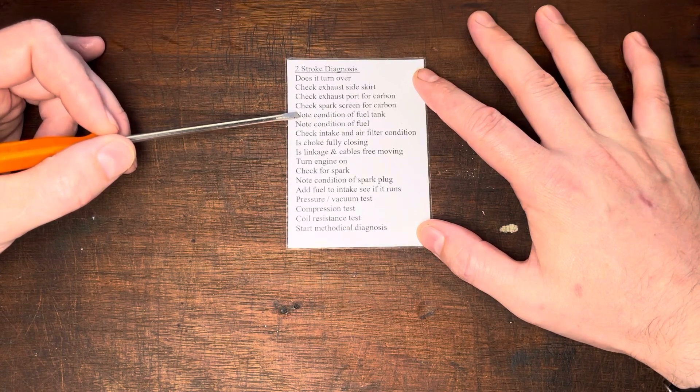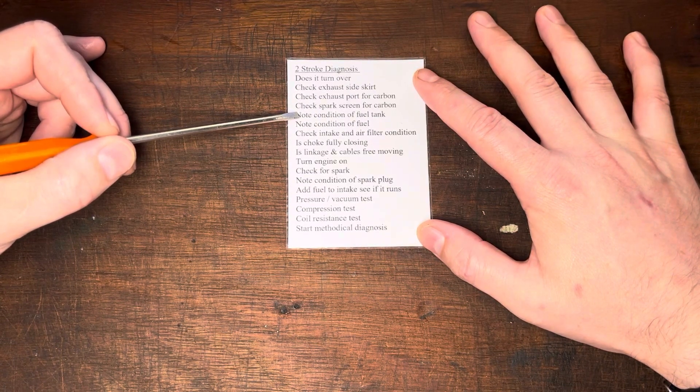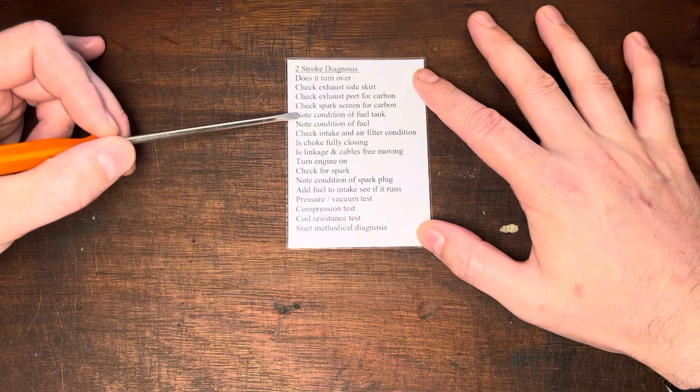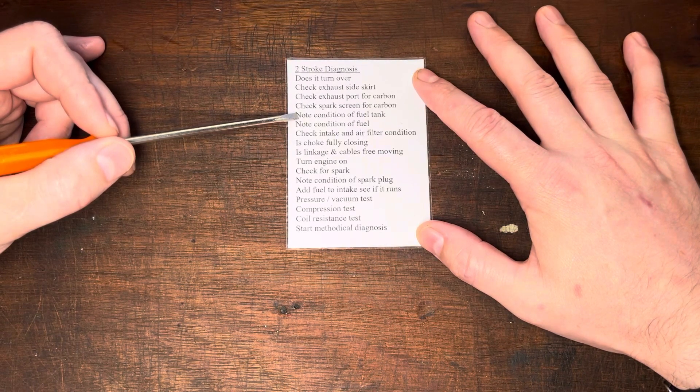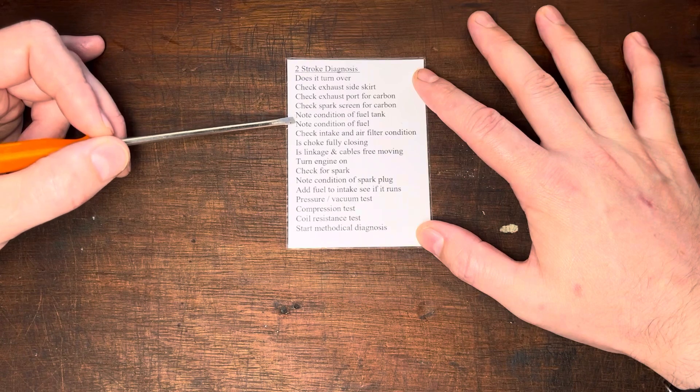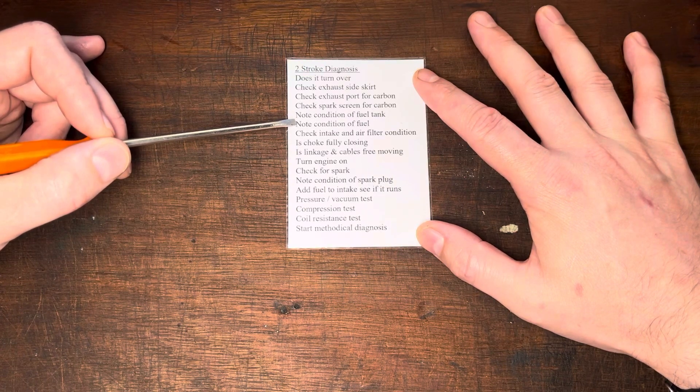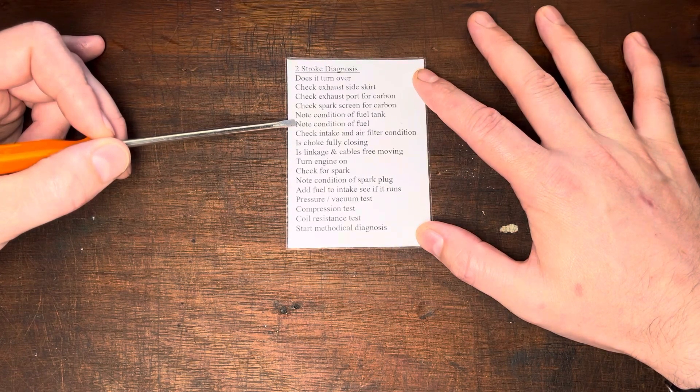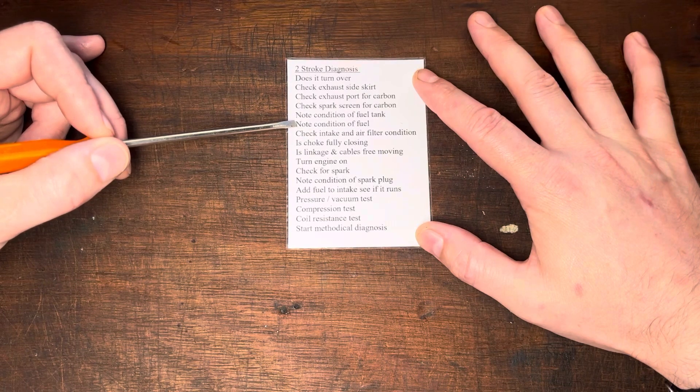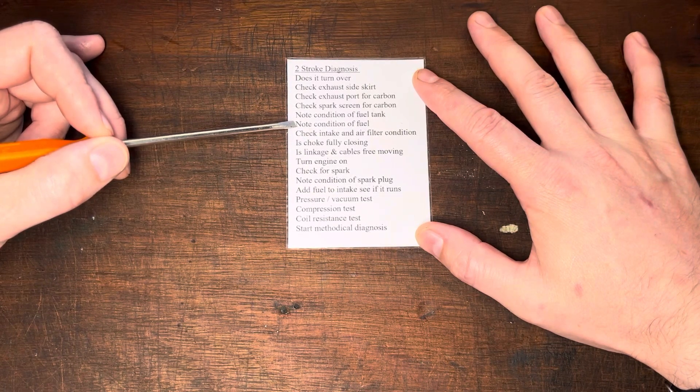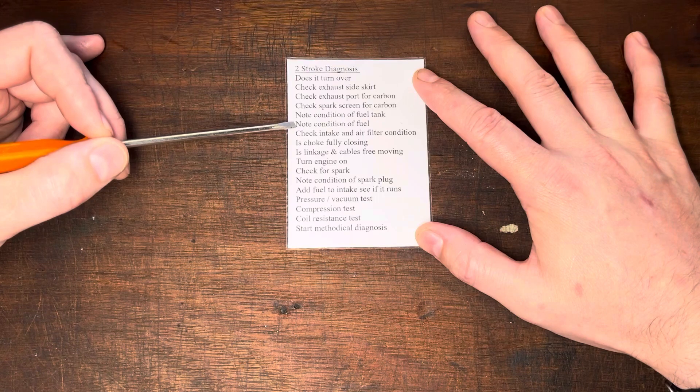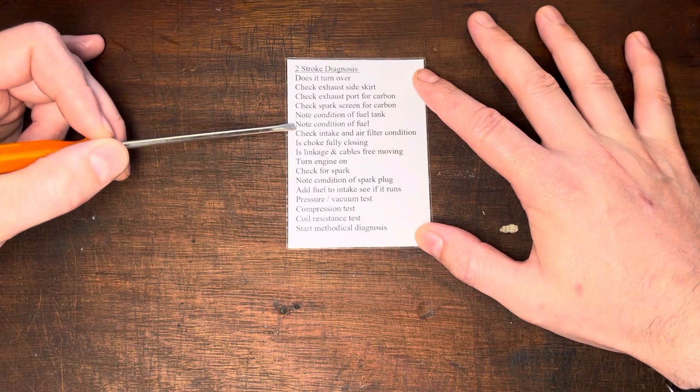Move on to the condition of the fuel tank. Just check that the fuel filter is attached. Have a quick look at the fuel filter. Note if there's any debris, there's dirt, there's varnished fuel in the tank and then move on to the condition of the fuel. If there's fuel present, have a sniff, you will know it's an offensive smell and it's not nice.